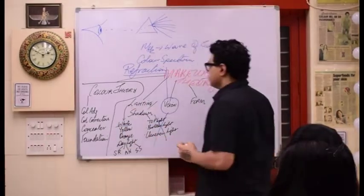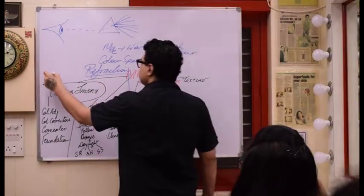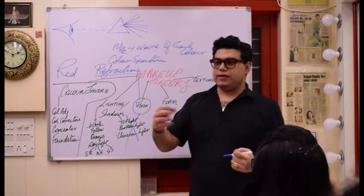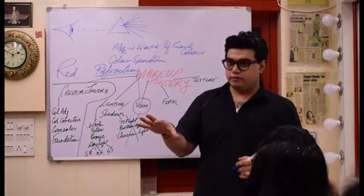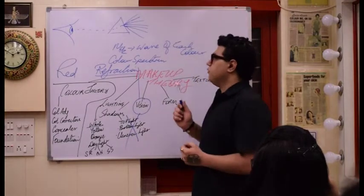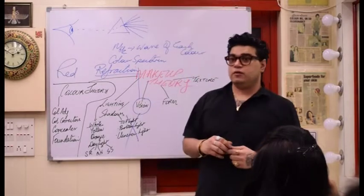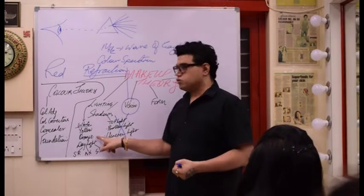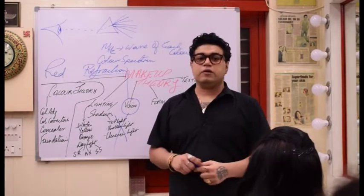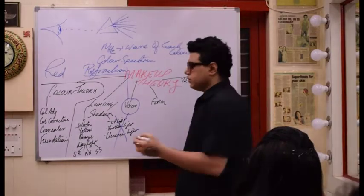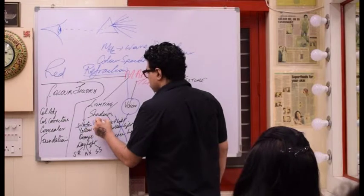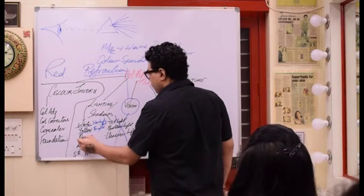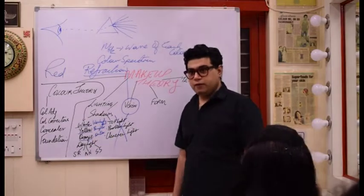When it comes to lighting: if you put the color red in white light, it will always look washed out. If you put the color red in yellow light, it will look brighter. If you put it in orange light, it will look darker. So: whenever you have white light, things look washed out. Whenever you have yellow light, it looks brighter. Whenever you have orange light, it looks darker.